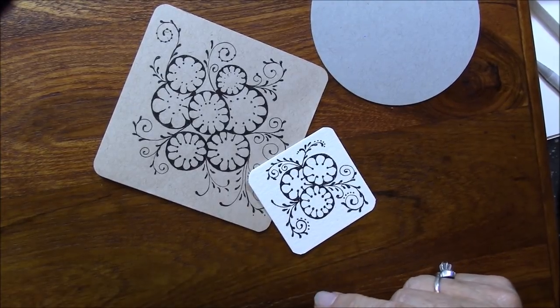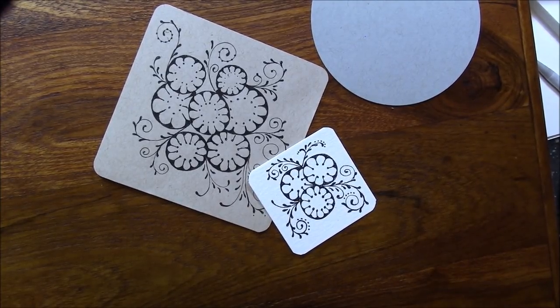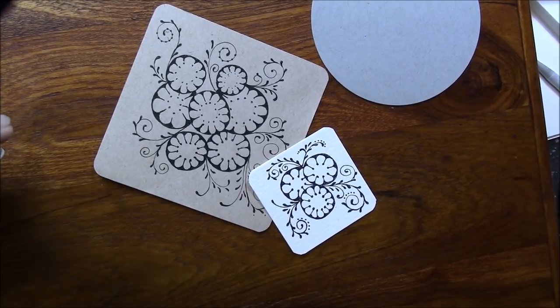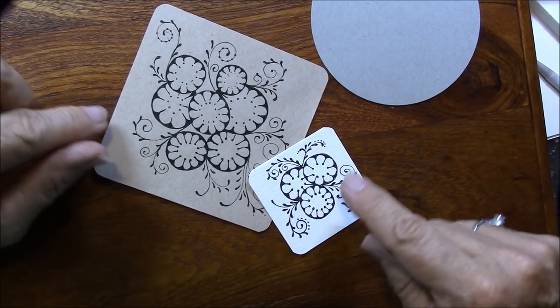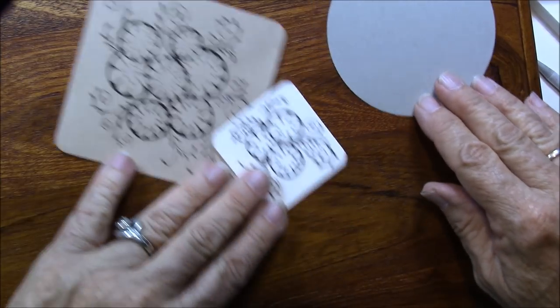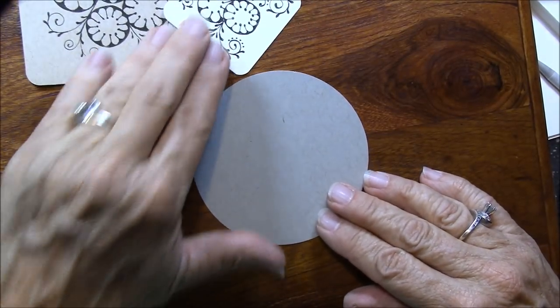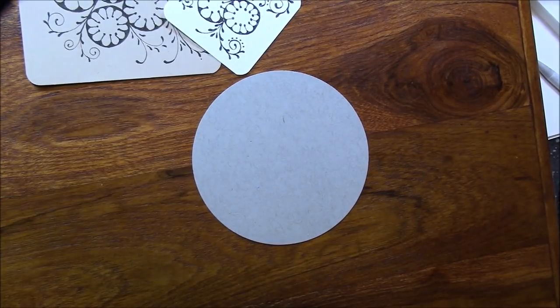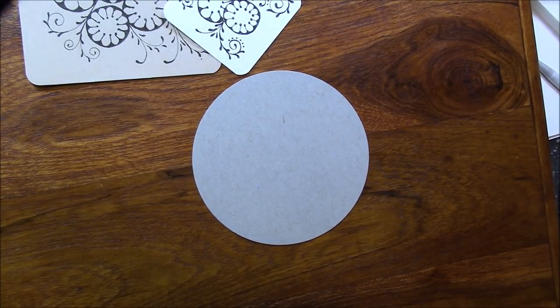It just gives you ideas for doing dingbats and little extra things on your tangles. So this was one of them. I'm going to show you how to do Paper Mint, and then we will do a little shading on it and just have some fun.